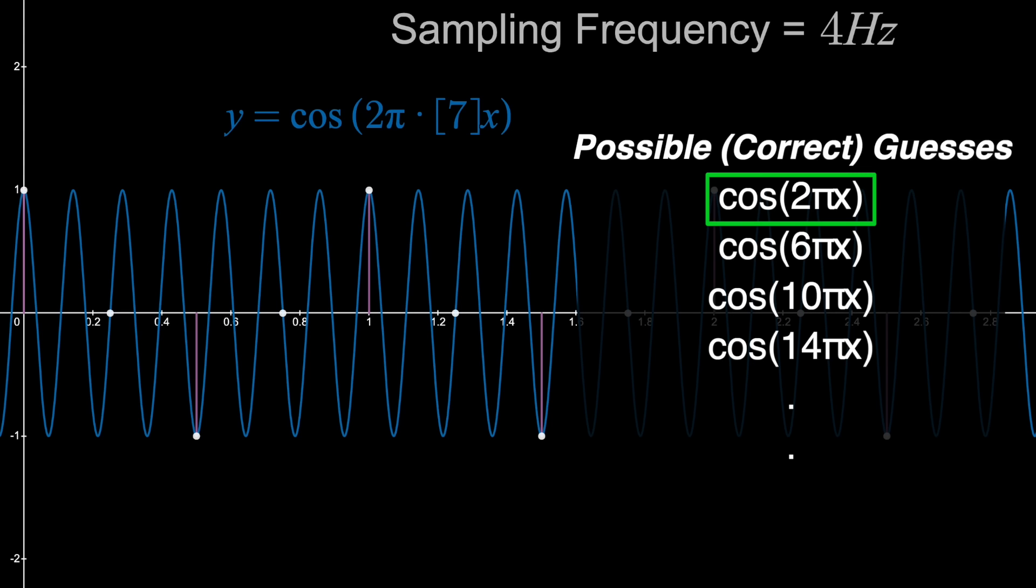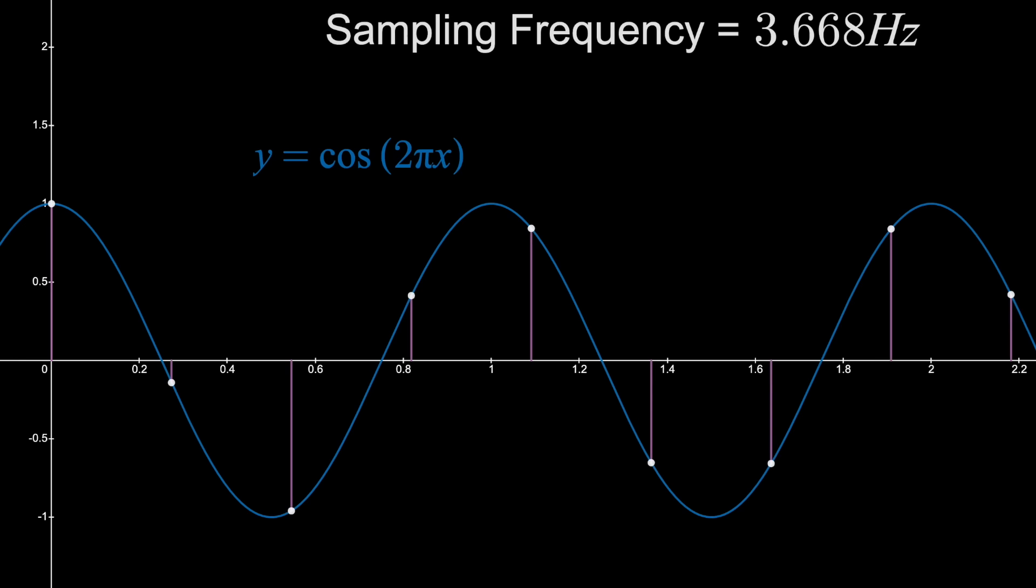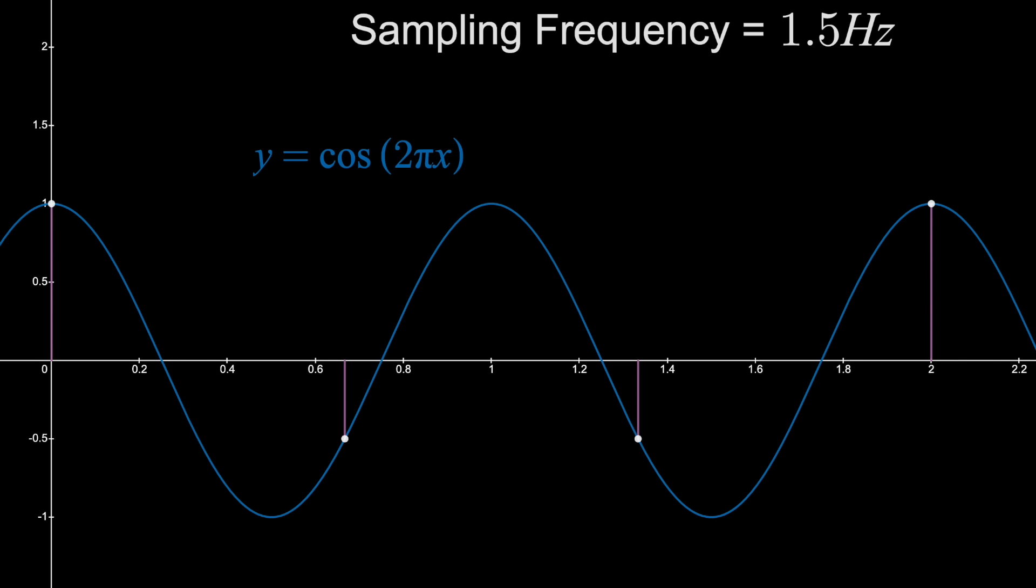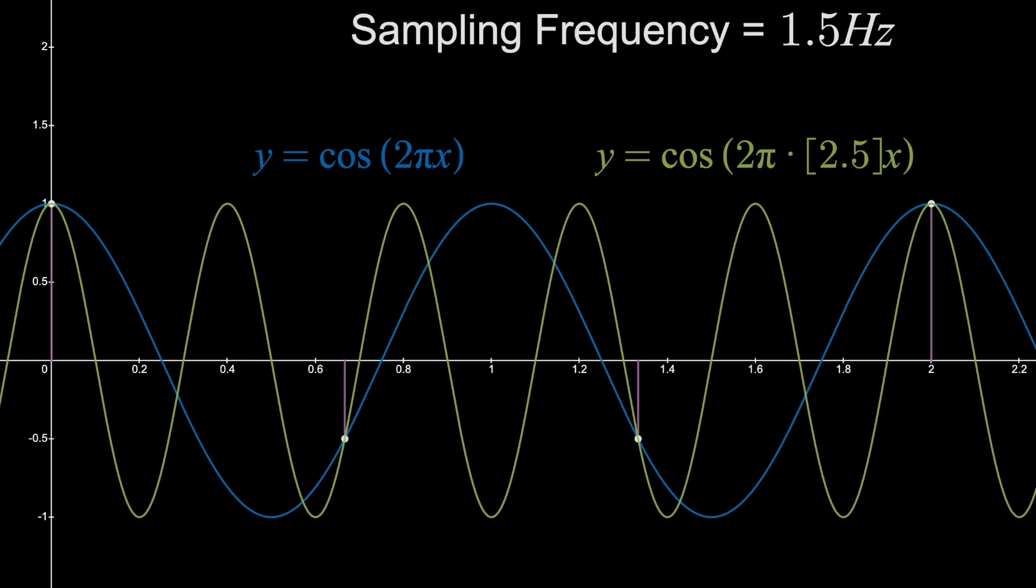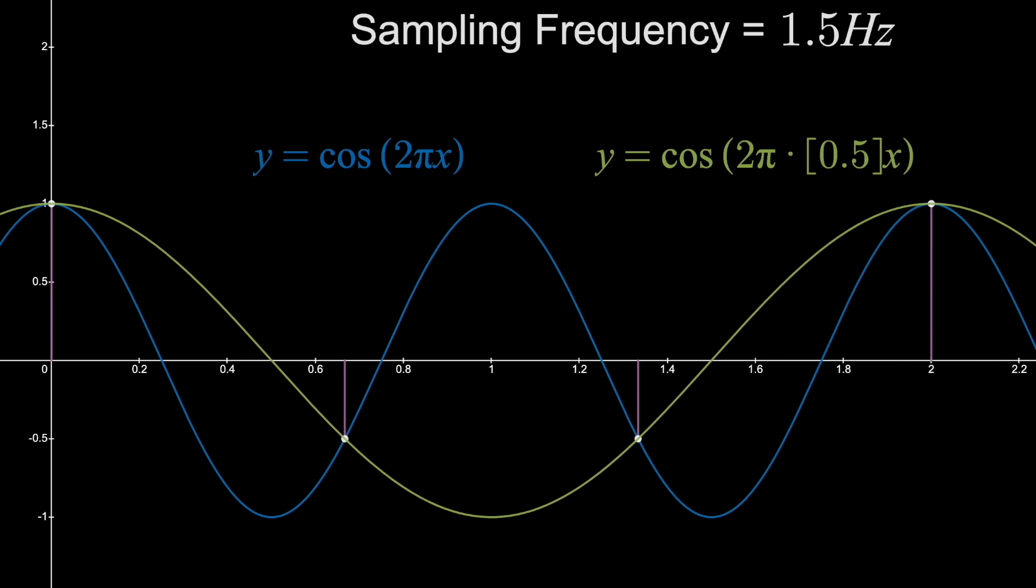However, going back to our original signal, something happens when you take the sampling frequency below 2 Hz. Let's say we sample at 1.5 Hz. Now, if I gave you these samples, there are still infinitely many other sinusoids that could contain these, like one with a frequency of 2 Hz or 2.5 Hz. But now another sinusoid that works is one with a frequency of 0.5 Hz, which is a lower frequency than our original signal.